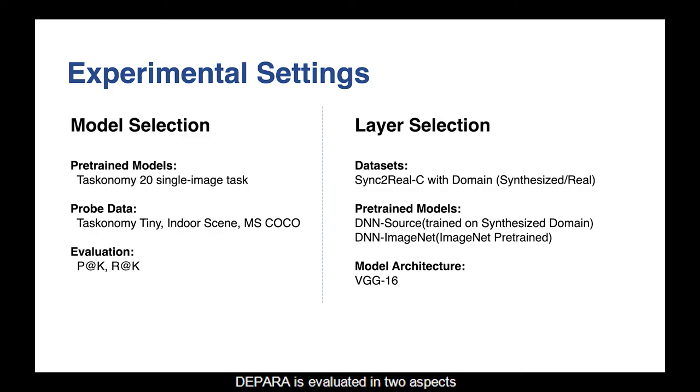DeepHara is evaluated in two aspects, including model selection and layer selection. On model selection, the experiments are conducted on trained models from Taskonomy. On layer selection, the experiments are conducted on synthetic-to-real C datasets.